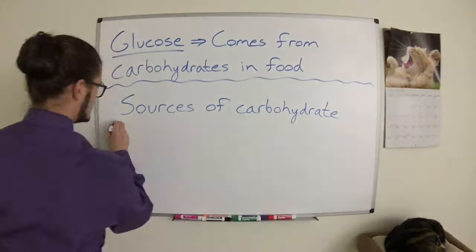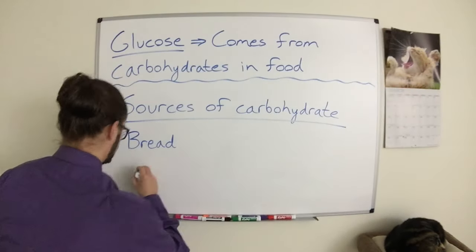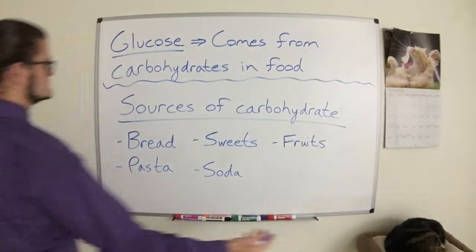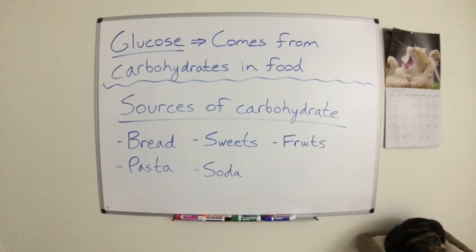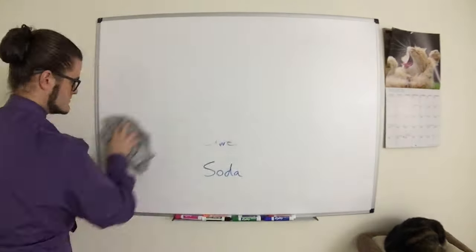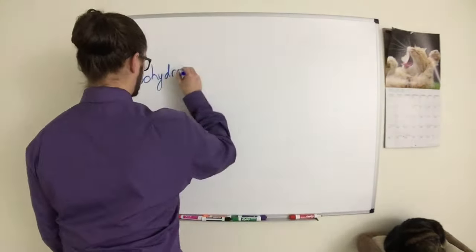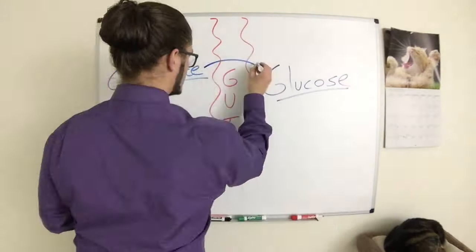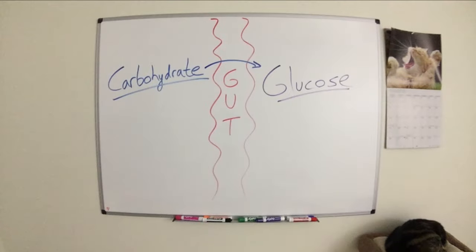Major sources of carbohydrates in the American diet include bread, pasta, sweets, soda, and fruit. And even if the food doesn't taste sweet, like bread for example, your gut will take those carbohydrates and ultimately convert them into glucose.